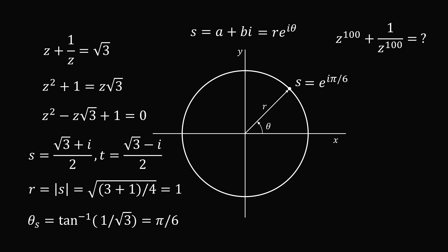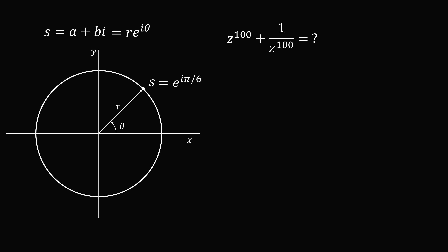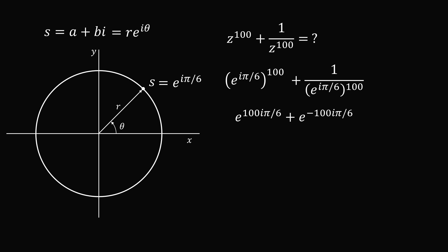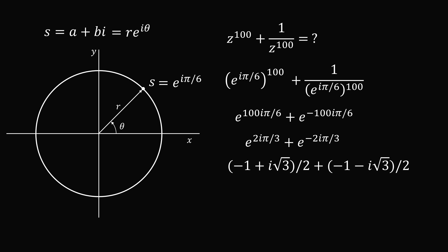From here, it's relatively easy to calculate s to the 100 plus 1 over s to the 100. Substituting and using exponent rules gives e to the power of 100i pi over 6 plus e to the power of negative 100i pi over 6. Every 2 pi cancels in the angle, simplifying to e to the power of 2i pi over 3 plus e to the power of negative 2i pi over 3. Evaluating in rectangular coordinates: negative 1 plus i root 3 all over 2, plus negative 1 minus i root 3 all over 2, which gives negative 1. That's another way to solve the problem.